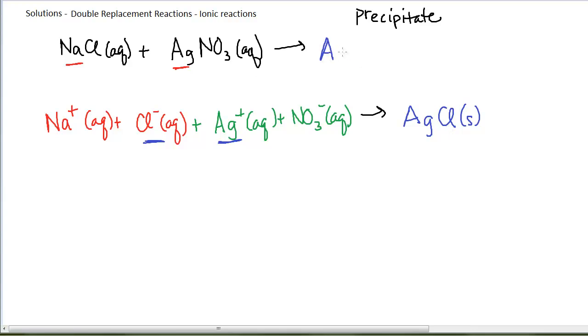So silver chloride, silver 1-chloride, is one of the products in this reaction. Now the other ions that are floating around are my sodium ions and my nitrate ions, and I can write that as my other product, NaNO3, but the sodium ions and the nitrate ions are not going to form a precipitate. They're going to remain as ions in solution, and so I'll continue to write that aqueous.